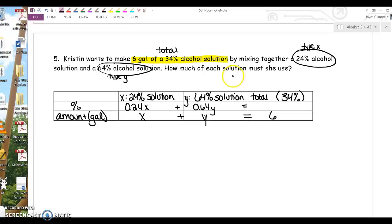2.04. So, you have to do 0.34, 34%, times 6, and that gives you 2.04.